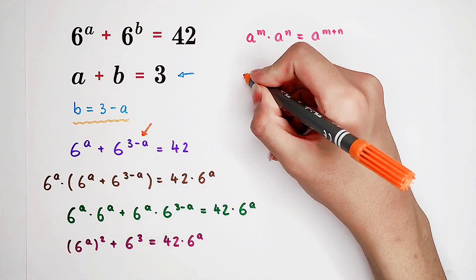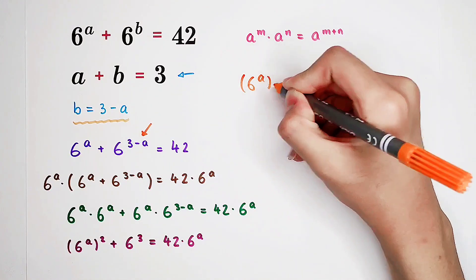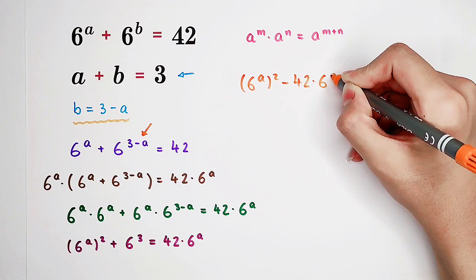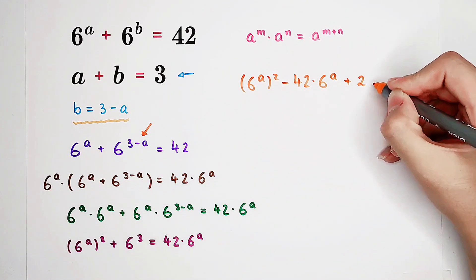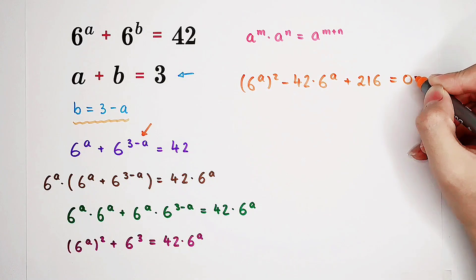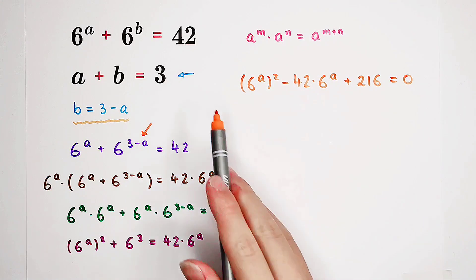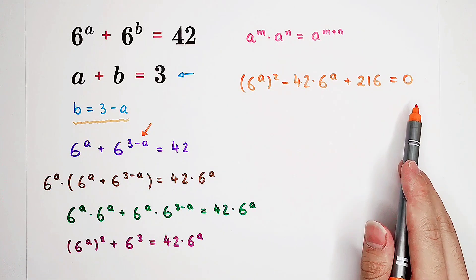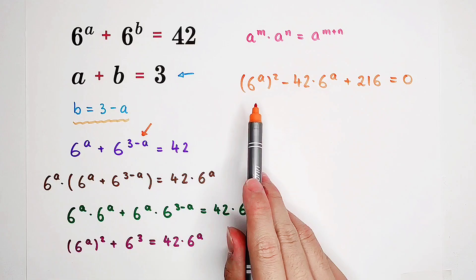Now, you can see, it is 6 to the power of A squared minus 42 times 6 to the power of A then plus this is 216 equals 0. Now, tell me, what is this? This is just a quadratic equation about 6 to the power of A.